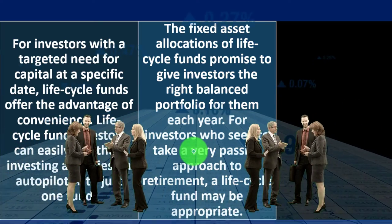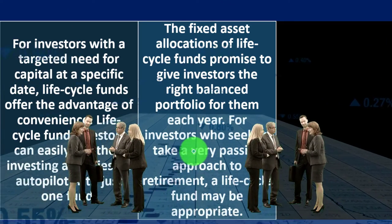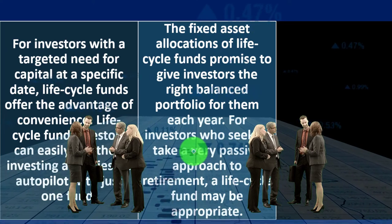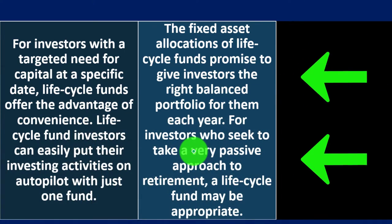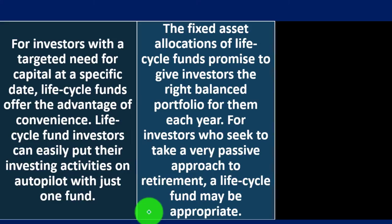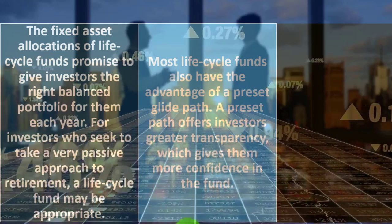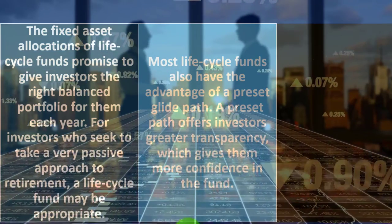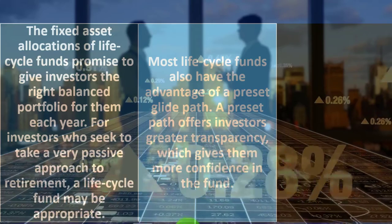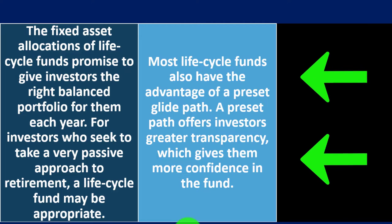You could use this as your underlying core fund and complement it with smaller funds if you want to play with the allocation a bit — for example, putting a little more weight in bonds or stocks by buying another fund alongside it. The fixed asset allocations of life cycle funds promise to give investors the right balanced portfolio each year. For investors who seek a very passive approach to retirement, a life cycle fund may be appropriate, designed to do the rebalancing automatically.